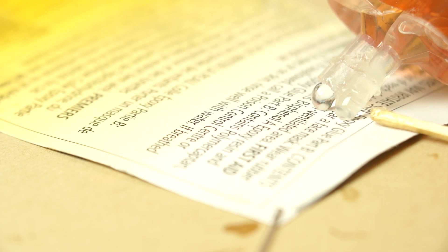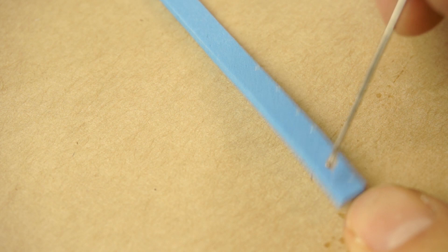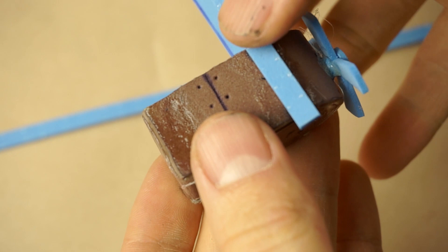We're going to make some tiny little rivets using the head of a needle. So mix your two-part epoxy together and use your sewing needle to apply it to the gondola straps.